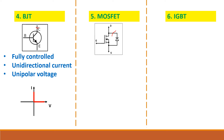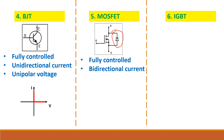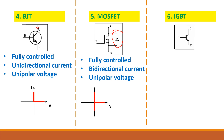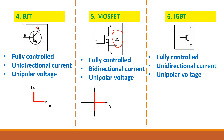For MOSFET, there is an anti-parallel body diode built in. When MOSFET conducts, current flows from drain to source; when MOSFET is in the off state, this body diode can carry current in the opposite direction. So MOSFET is a bidirectional device — it can carry current in both directions — and it can block forward voltage, making it a unipolar voltage blocking switch. For IGBT, it is a fully controlled device with unidirectional current and unipolar voltage blocking — it blocks forward voltage only.